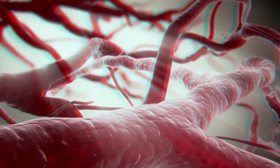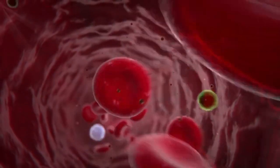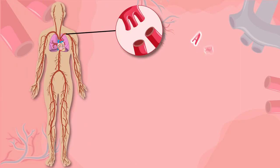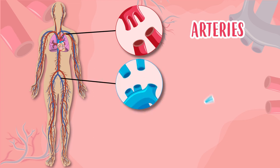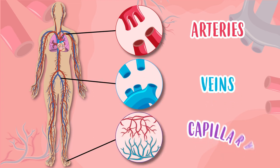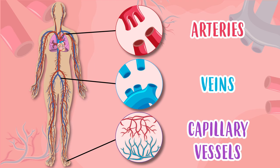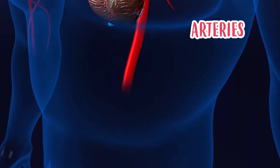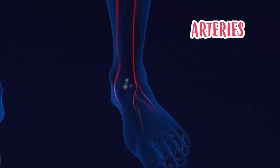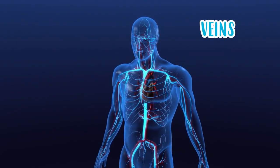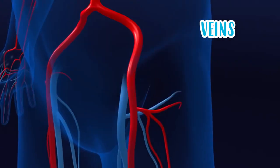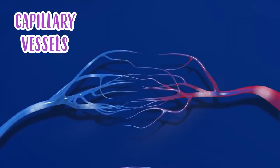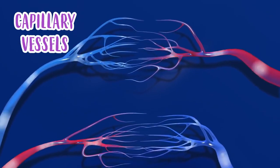When blood exits our heart, it flows through our whole body through blood vessels. And there are three types: arteries, veins, and capillary vessels. Arteries deliver oxygen and nutrient-rich blood to all our organs. Veins take that blood, low in oxygen, back to the heart. And the capillary vessels, which are very small, connect arteries with veins and cells.